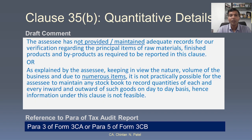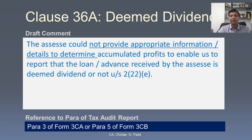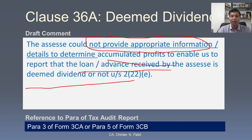For quantity details of stock: if stock records are not maintained adequately, please mention that in your comment. If it is not maintained because of numerous items and is practically not possible, it is advisable to mention separately that it is not particularly possible for the assessee to maintain that. For Clause 36A — deemed dividend — if the assessee has not provided information appropriately, or about actual profits to enable us to report whether loans or advances received are deemed dividend, and if you are unable to determine, better to provide a comment in your report.